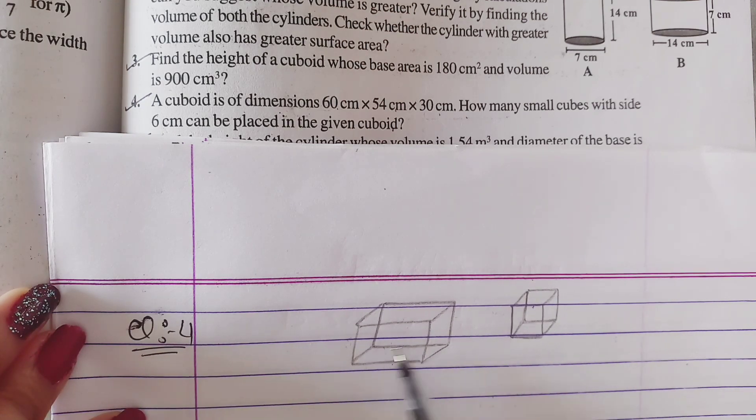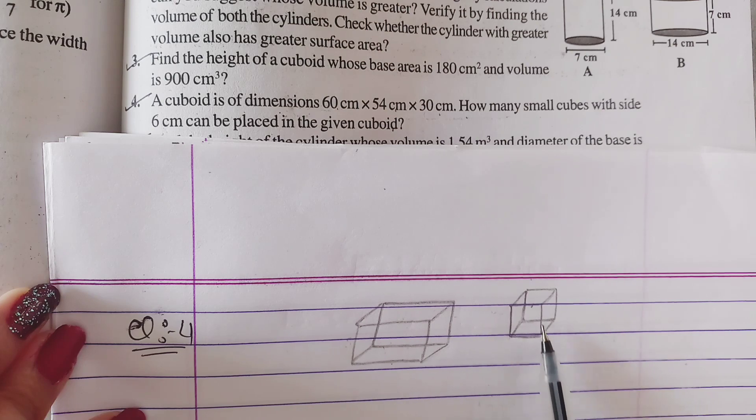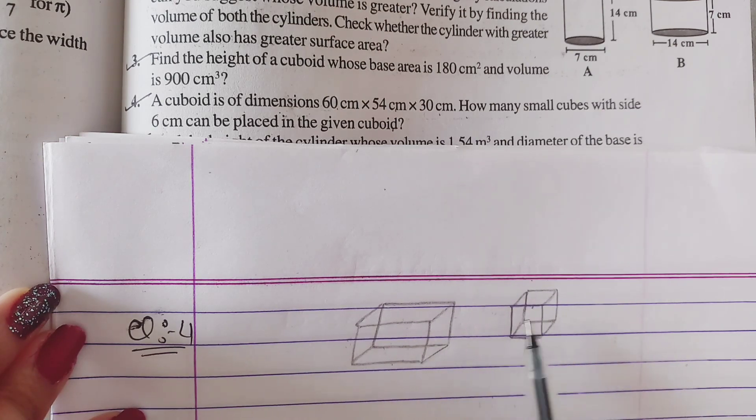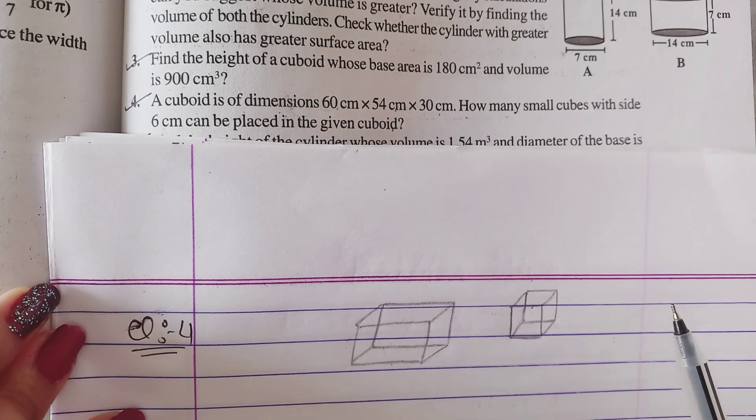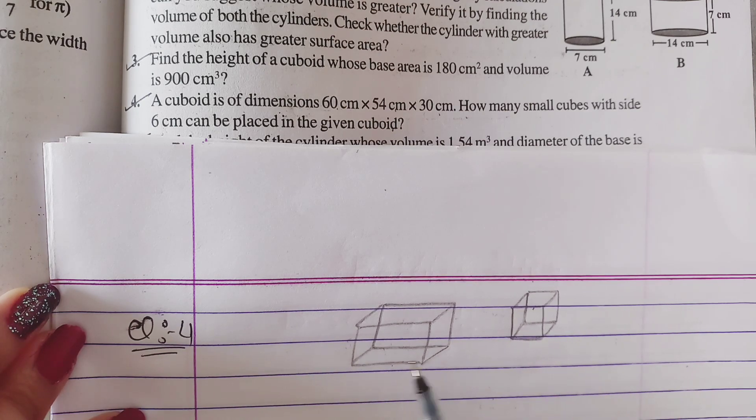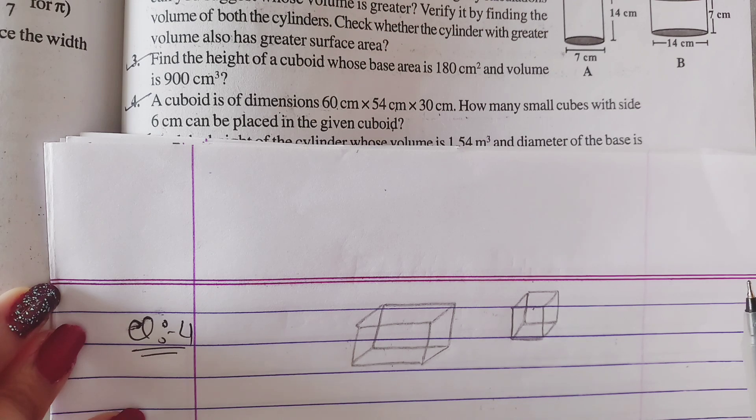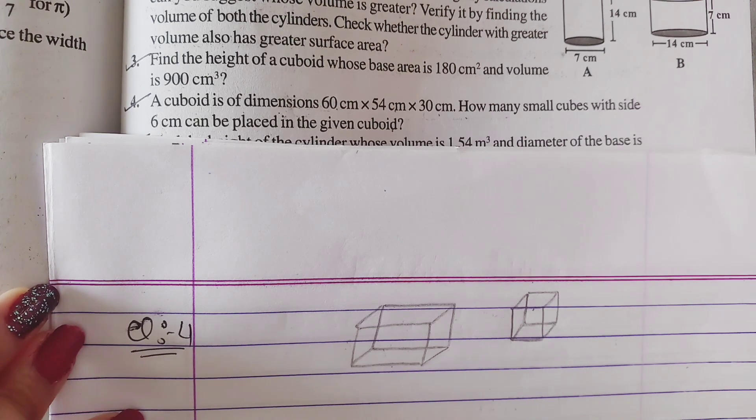How do we do? First, we will find the volume of the cuboid and the cube, then we will divide the volumes. So we will find the number of boxes in the cuboid box. Let's see how to do the sum.